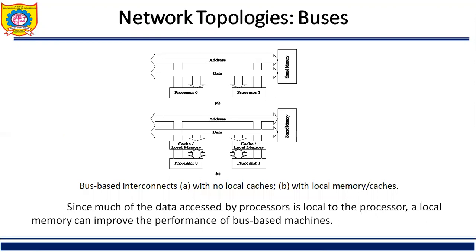Here you can see the bus topology where the address bus and data bus communicate with processor 0 and processor 1, and they are accessing a global memory. Figure A is without local cache and figure B is with local cache. Cache can improve the performance of bus-based machines.